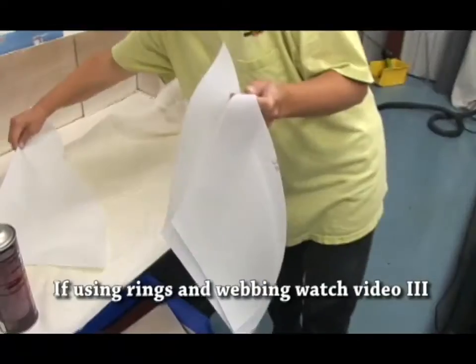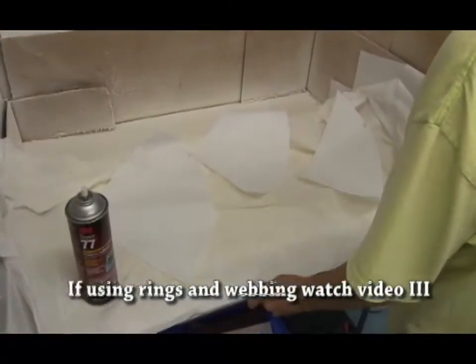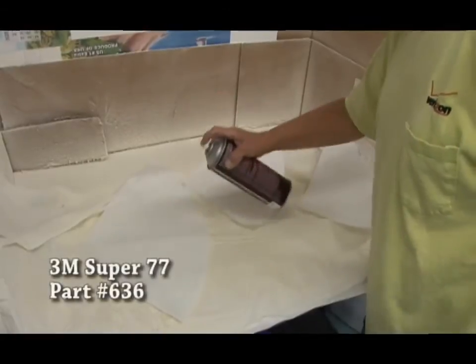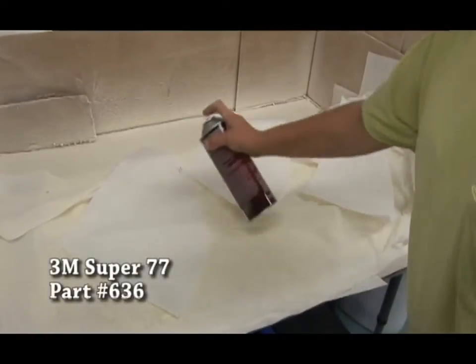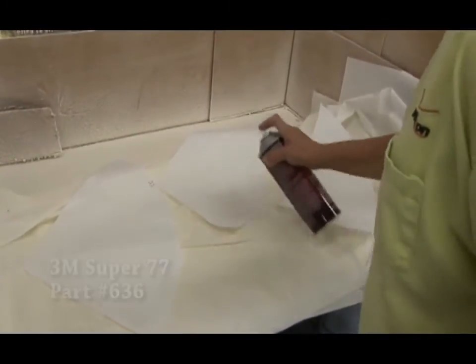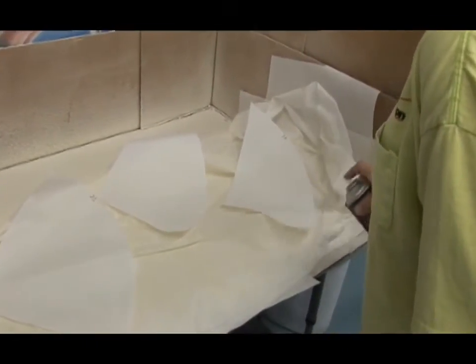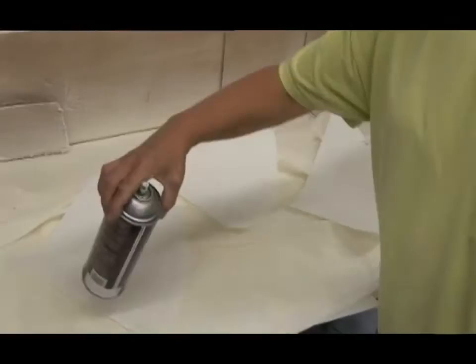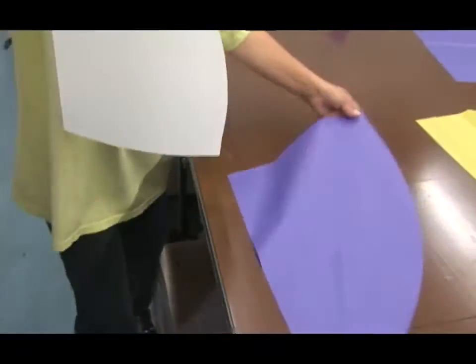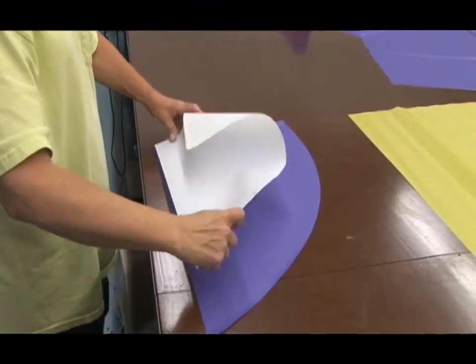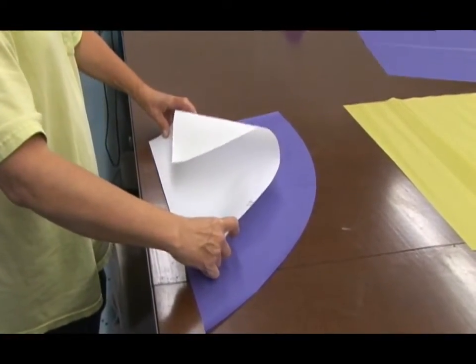We'll take three of the Dacron patches that are included with this spinnaker kit. You may have more. And we'll apply a Super Spray 77 from 3M to each one of these assemblies. This is an awesome way to baste patch assemblies together without having to worry about wrinkles. If you don't have a 3M Super 77, you can use double-sided tape or seamstick, which was used in basting the seams together, but it's not as easy.